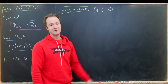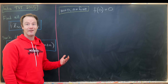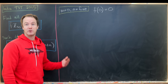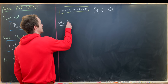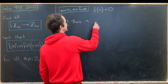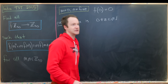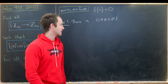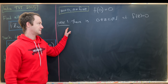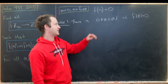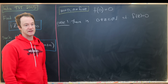Now that we know f achieves the value zero at zero, this motivates the question: does it ever achieve zero at a non-zero point? We'll break this into two cases. Case one: there exists z not equal to zero such that f(z) = 0. Case two: f(z) is not equal to zero unless z is equal to zero.